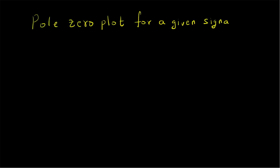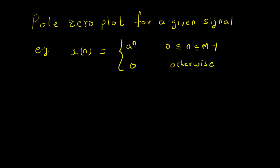Hello, welcome. In this short video let us look at an example illustrating the development of a pole-zero plot for a signal. Specifically, we will look at an example where x[n] is given as a^n for values of n between 0 and M-1, and the signal is 0 otherwise. The value of a is given to be greater than 0.